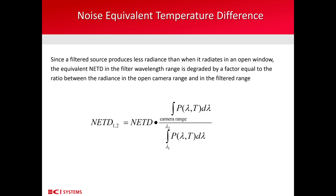The important figure of merit NETD 1,2 — on the left side of the equation — can be calculated by multiplying the noise equivalent temperature difference NETD given by the manufacturer of the camera, and multiplying this parameter by the ratio of two integrals. In the numerator is the integral of the Planck function derivative P lambda T delta T lambda over the full camera wavelength range without the filter. In the denominator is the integral of the Planck function at room temperature T within the gas absorption range lambda 1 to lambda 2.